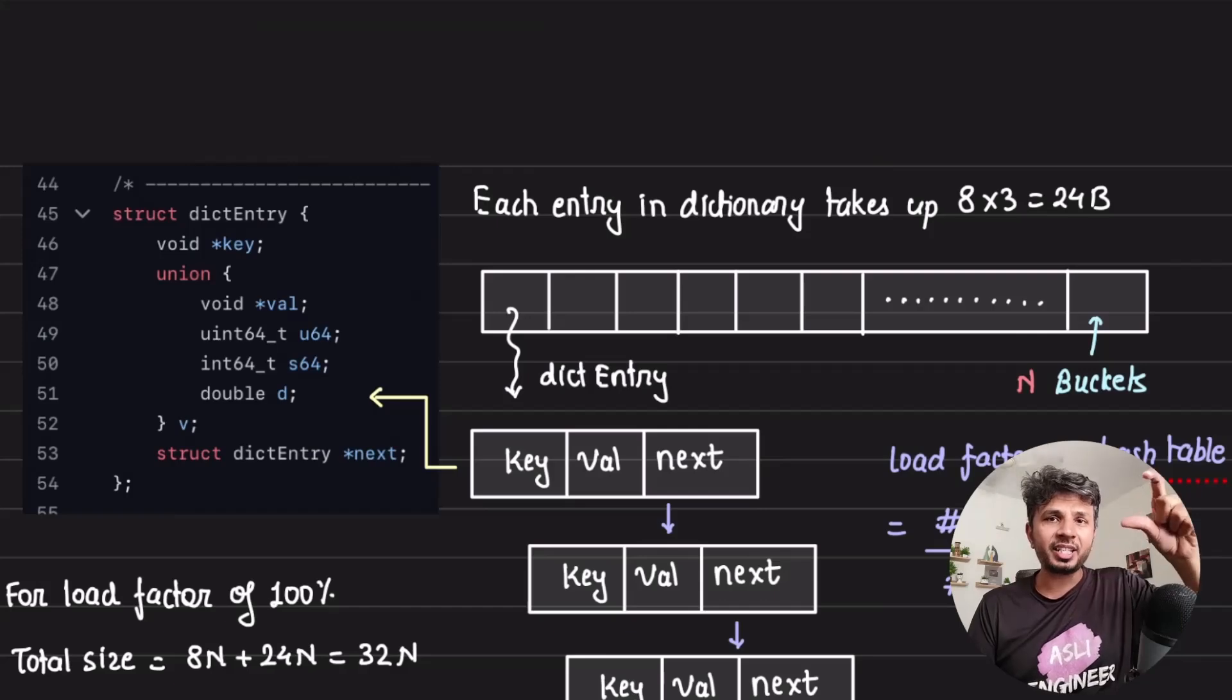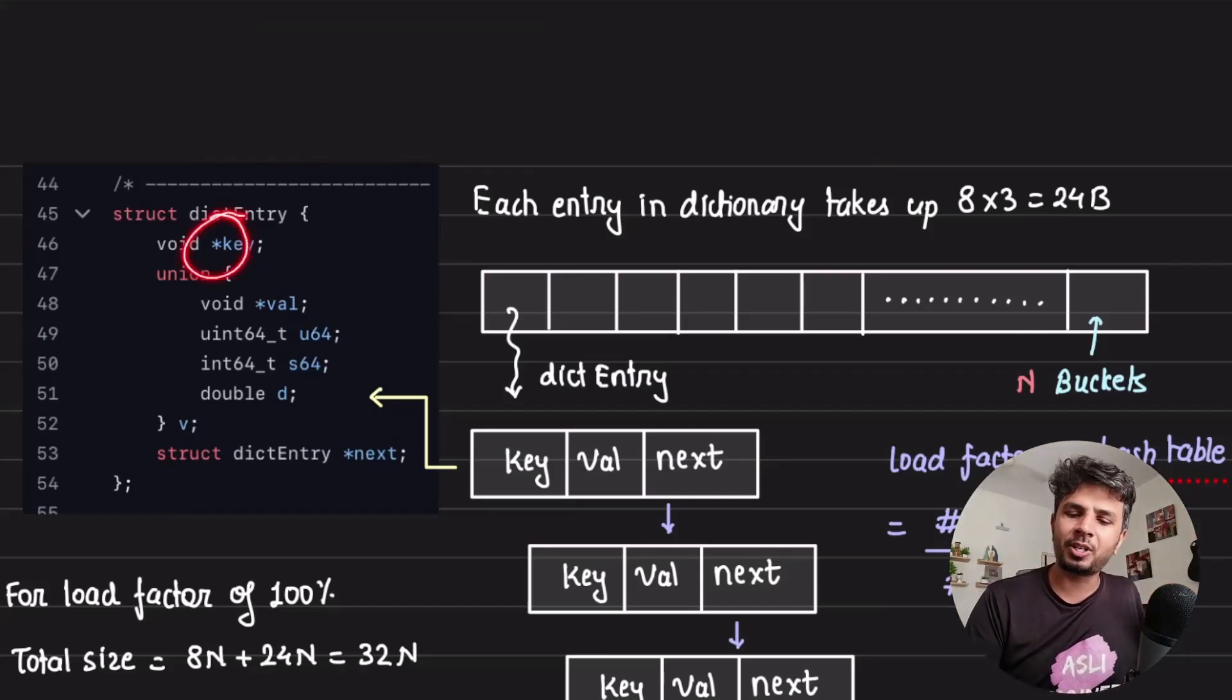Now each entry in the dictionary in case of Redis looks something like this. It has a key pointer, the value it is holding, and the next pointer. So each dict entry size is 8 + 8 + 8 which equals 24 bytes.